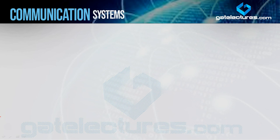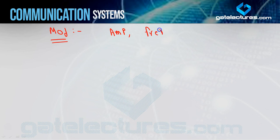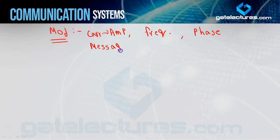So what is modulation? Modulation is the process in which one of the characteristic parameters of the carrier signal — suppose amplitude, frequency, or phase — will be varied with respect to message signal amplitude variation. So modulation means one characteristic parameter of the carrier signal, whether amplitude, frequency, or phase, will vary linearly with respect to the message signal amplitude variation.